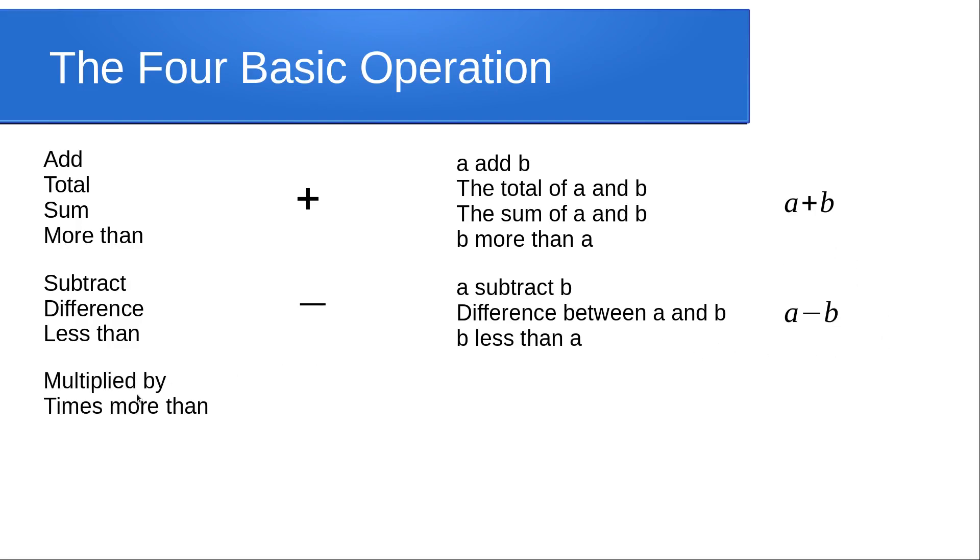We've got multiplied by, times more than, and times. We don't represent those with a symbol; we just put the things together, and we recognize that when we do that, that means multiplication. So A multiplied by B, B more times than A, and A times B—we just put them together. It's just AB, and when we see things like that, we recognize that means multiplication.